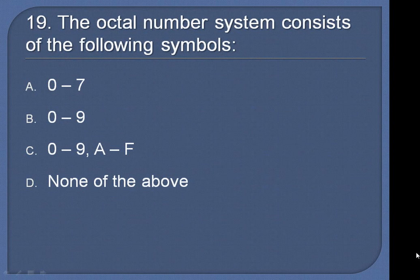Question 19: The octal number system consists of the following symbols: 0 to 7, 0 to 9, 0 to 9 A to F, or none of the above? Answer: 0 to 7.